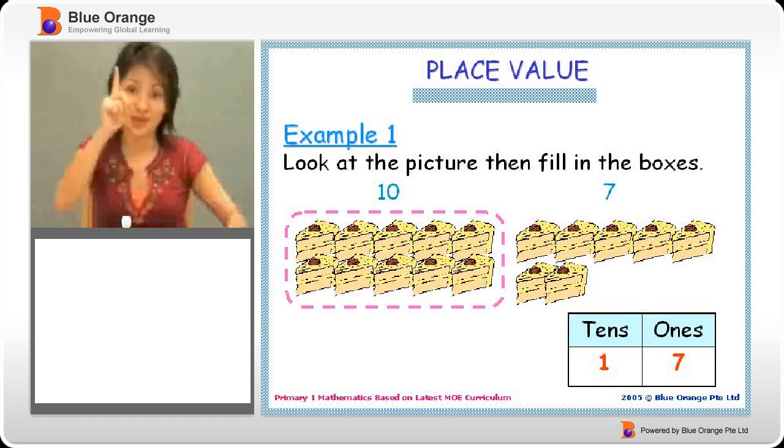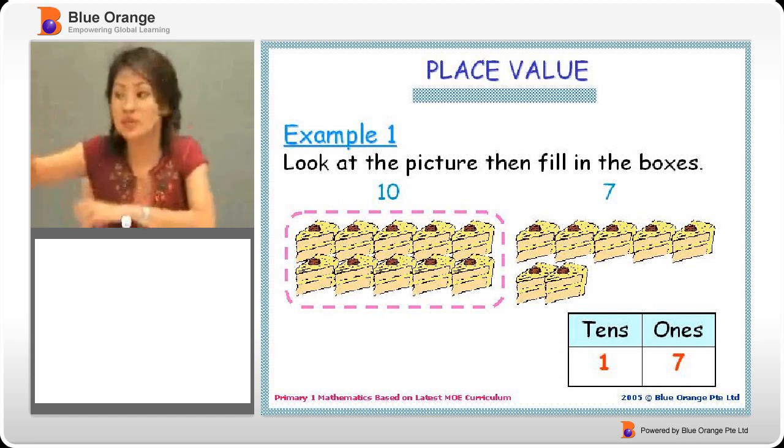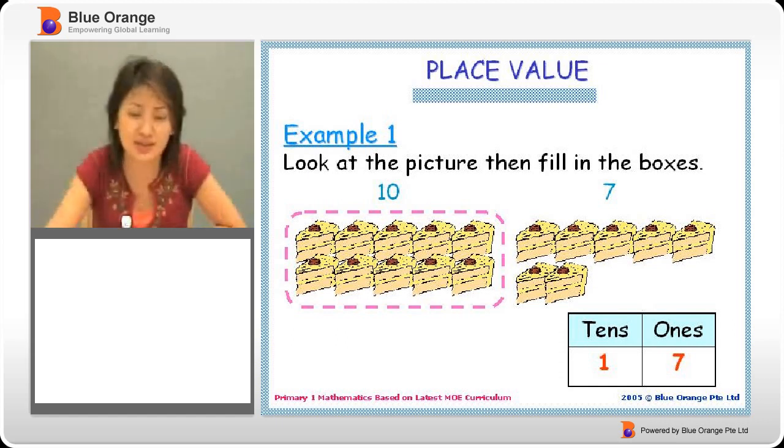A group of 10. So 1 ten. And then 7 individual pieces because they can't make up to 10. So we have 7 ones. So 17 is the same as 1 ten, 7 ones.